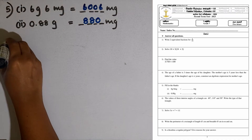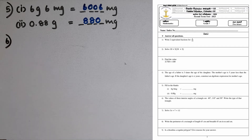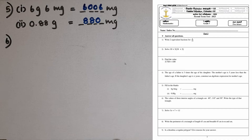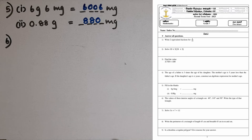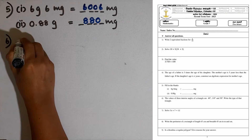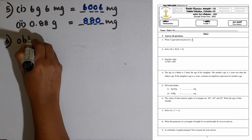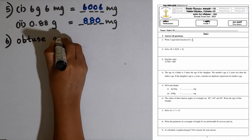Question number 6. The values of three interior angles of a triangle are 40, 110, and 30. Write the type of that triangle. This is an obtuse triangle as one angle is an obtuse angle. The type is obtuse angle triangle.